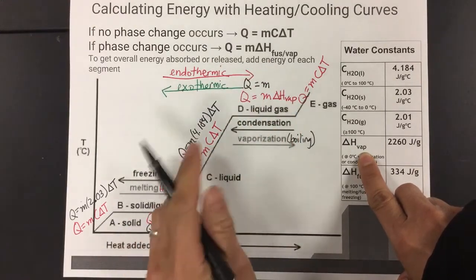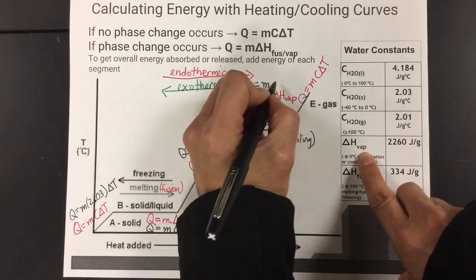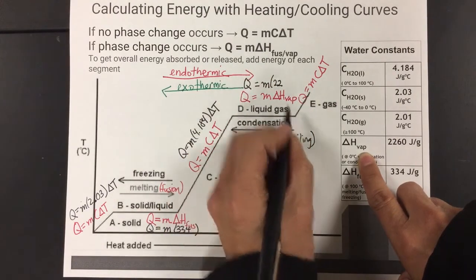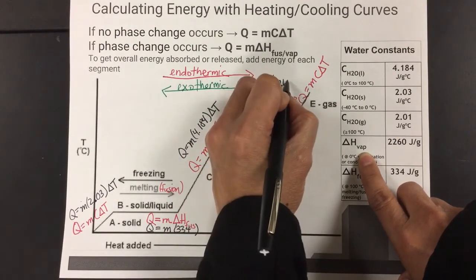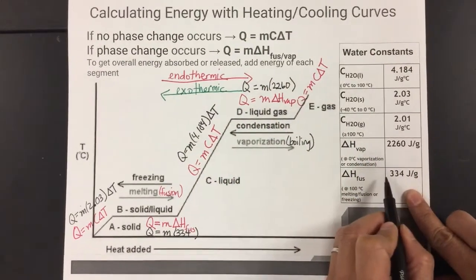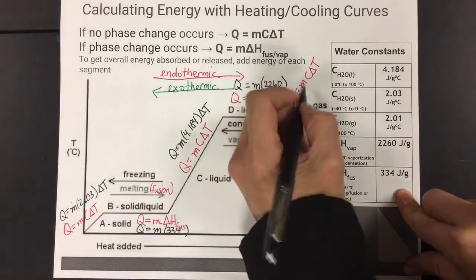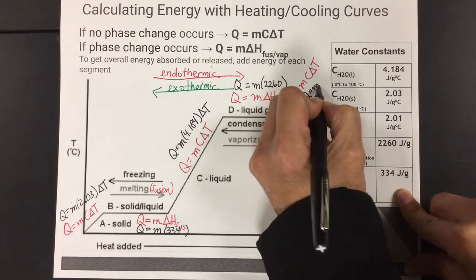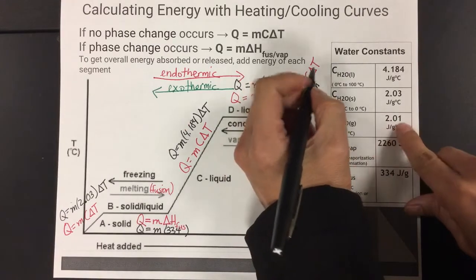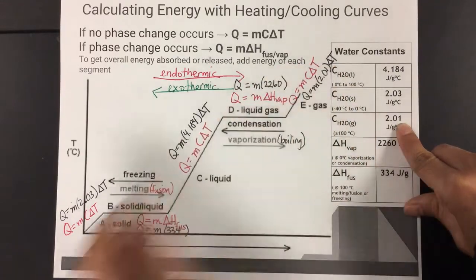Noting, make sure you note that this is water's values and constants. And every other substance, different substances will have different values. So this is a very long stretch. That's why the ΔH of vaporization is much bigger than the ΔH of fusion. Okay, so that's the equation for water. Now we go down here, mass times the specific heat of gas, which is 2.01 times ΔT.